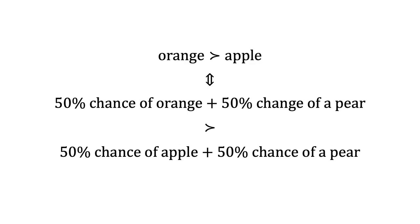Compare the two scenarios. The choice between an apple or an orange from the first scenario is mixed with the probability of a pear in the second. Under the axiom of independence, a person who prefers the orange in the first will prefer the gamble with the orange in the second. Mixing those two lotteries — a 100% chance of an orange or a 100% chance of an apple — with a third lottery, in this case a pear, will not change their order of preference.